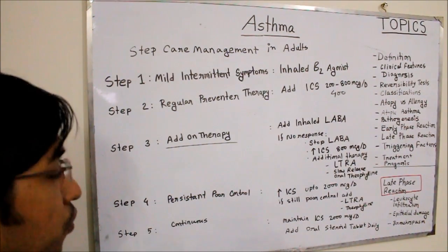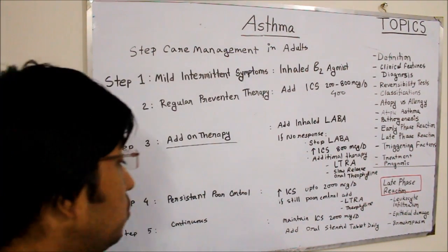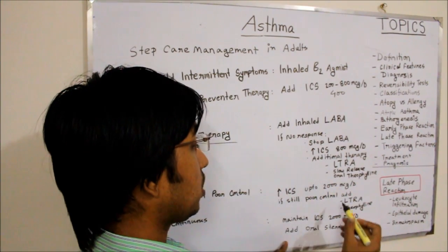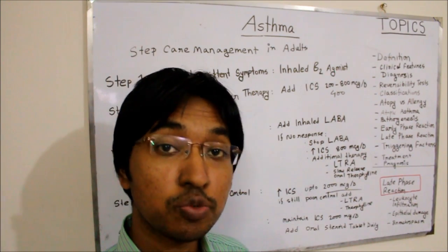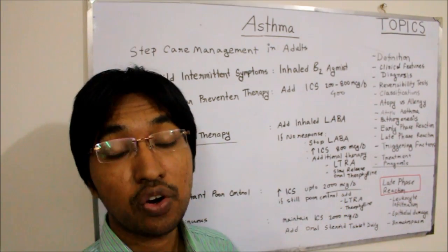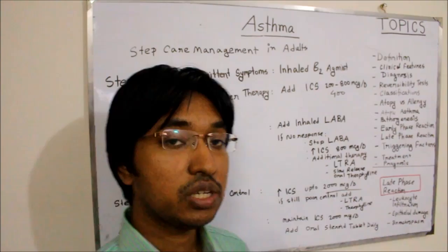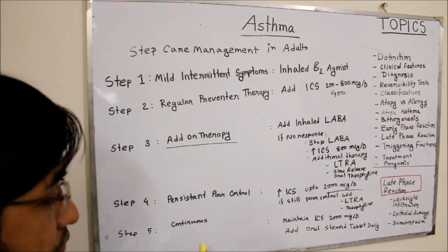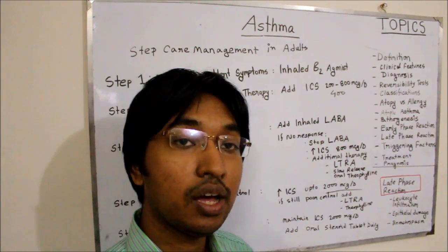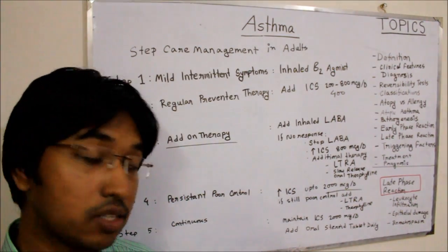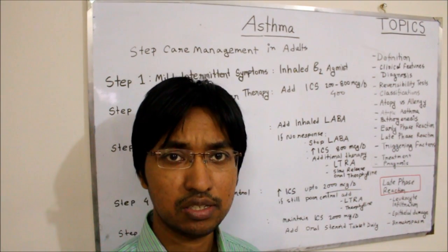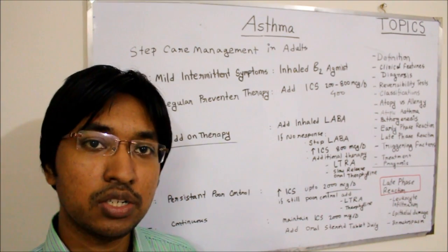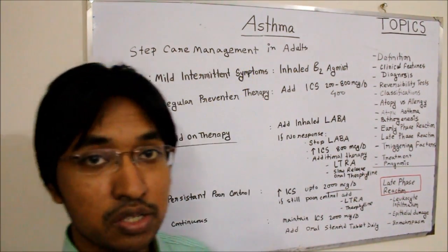Step 4 increases inhaled corticosteroid up to 2000 micrograms per day, and if control remains poor, additional drugs such as leukotriene receptor antagonist and slow-release oral theophylline are added. Step 5, the final step, maintains high-dose inhaled corticosteroid at 2000 micrograms per day plus a daily oral steroid tablet. If the patient's condition is still not controlled, the patient must be referred to hospital for admission.